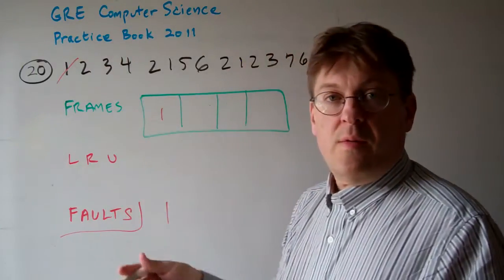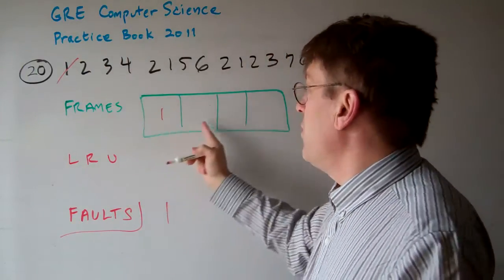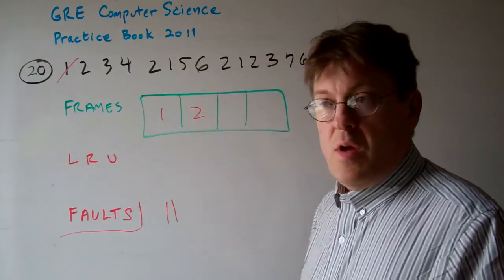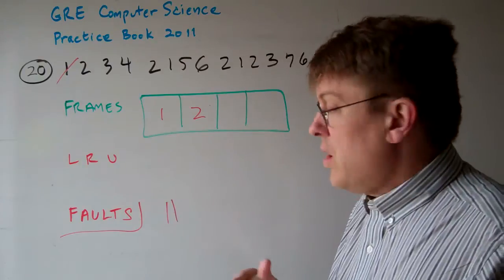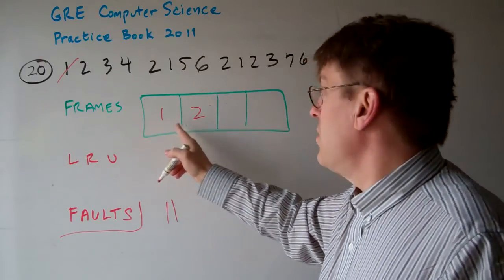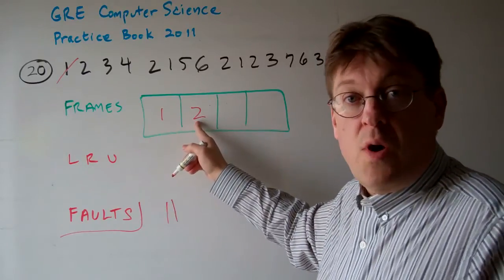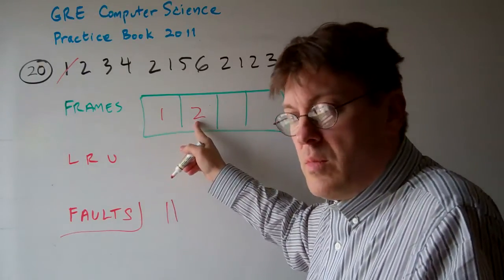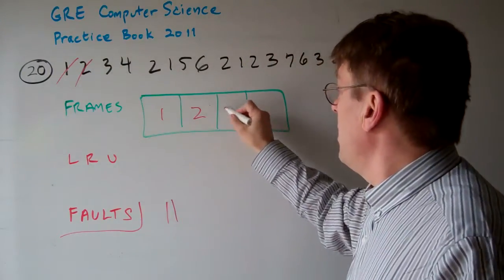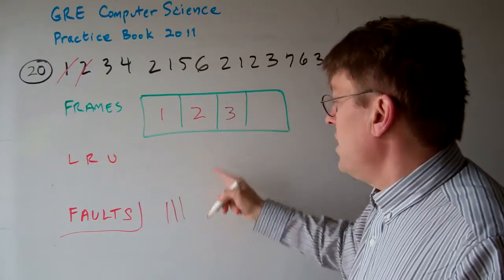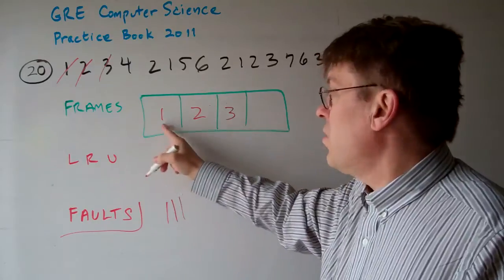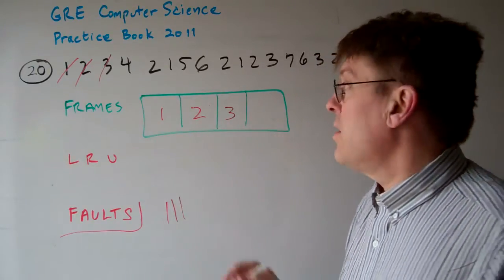But now one is gone. Now we access frame two. Frame two is not in here. That means it's a fault. So we put two in here. What's the least recently used one? Number one is the least recently used. This number two is the most recently used. We used that one right away here. So now two is gone. Three, same thing. Three wasn't in there, so we get a fault. And now three is the most recently used one. It's still the least recently used, L-R-U.